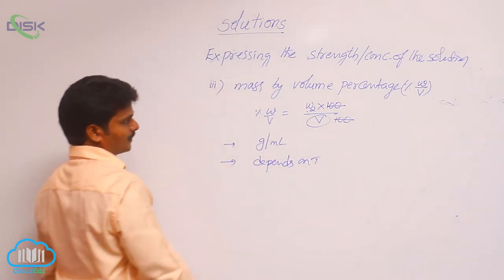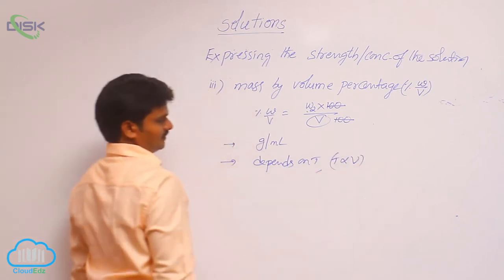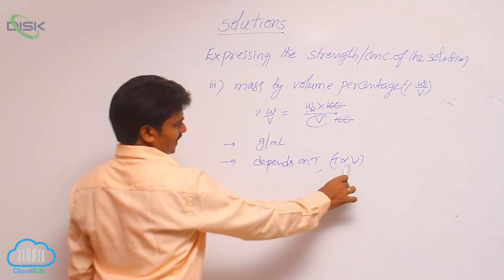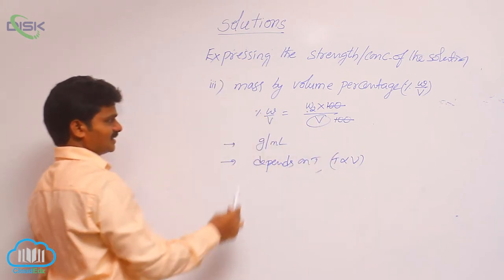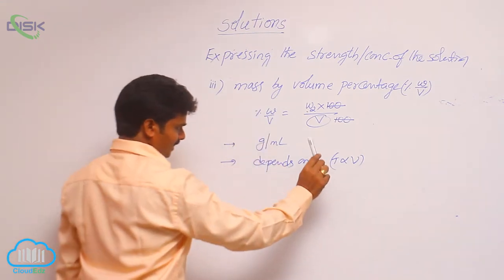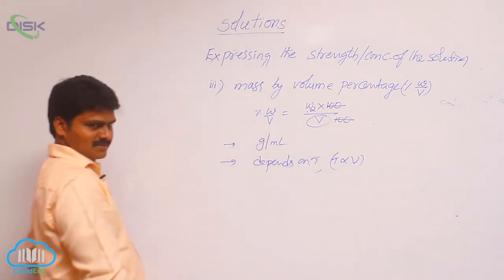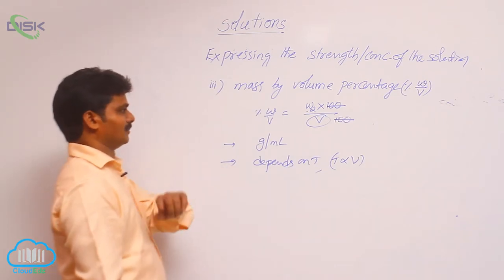How volume is in the denominator? You know T and V are directly proportional. So as T and V are directly proportional and V is inversely proportional to percentage w by V, this mass by volume percentage is inversely proportional to temperature. That means, increase in temperature decreases the mass by volume percentage.